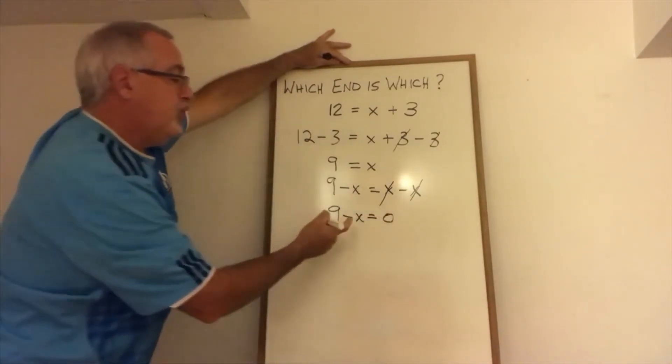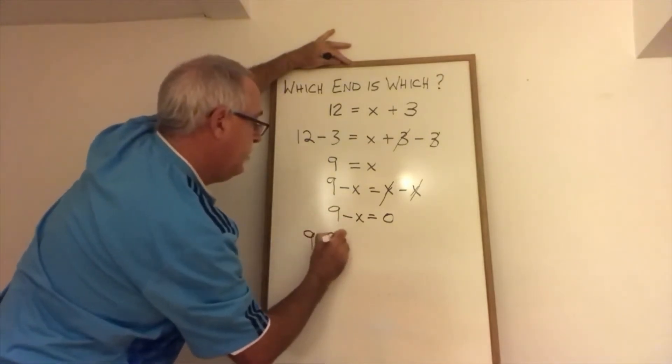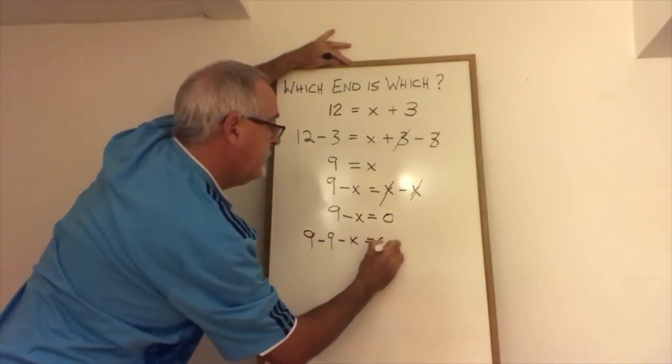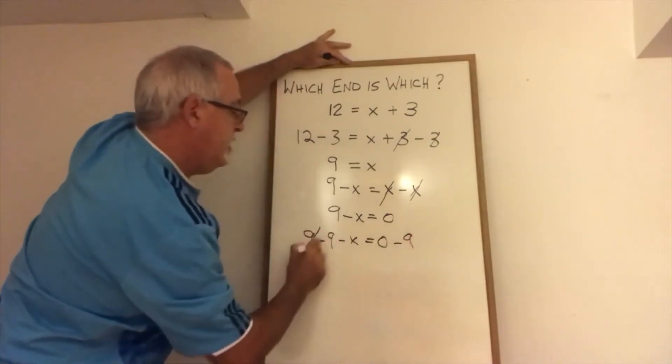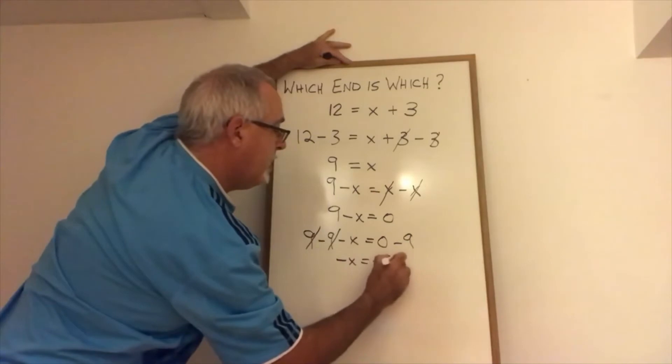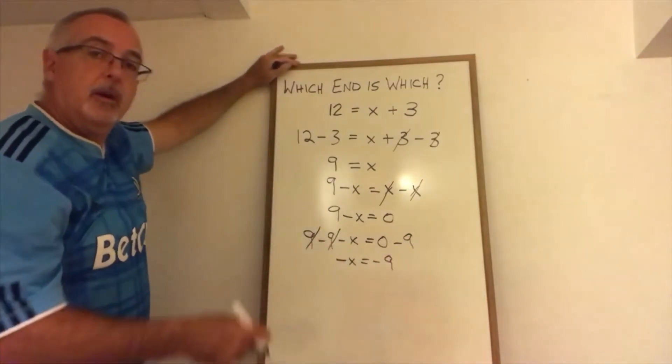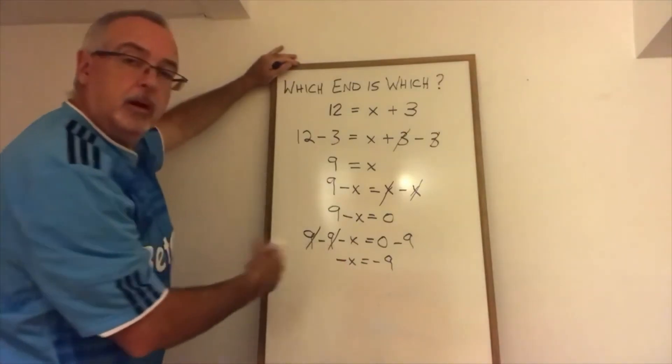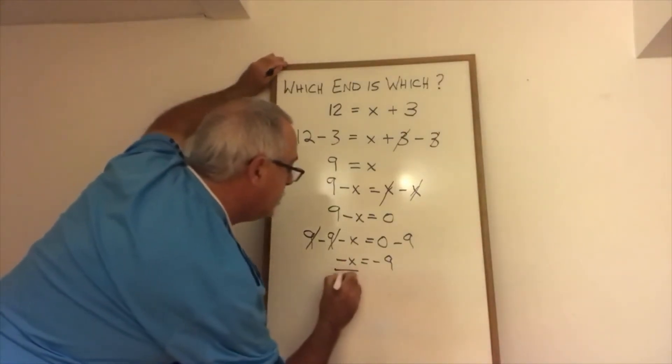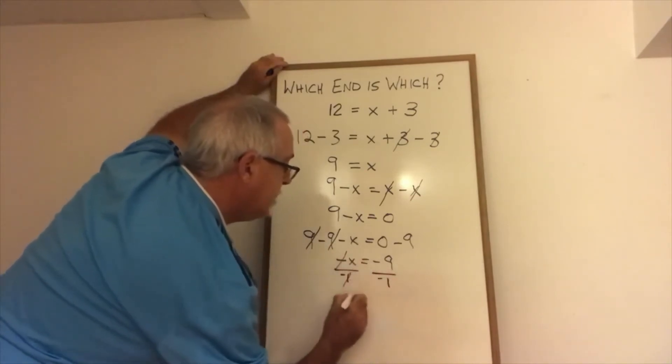Now I can subtract a nine from both sides of the equation. And these nines cancel. I have negative X equals negative nine. I'm almost finished. I don't want to know what negative X is equal to. I want to know what X is equal to. So my X is being multiplied by a negative one. I can divide both sides by a negative one.